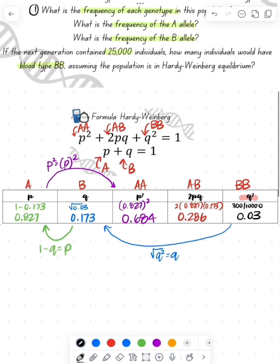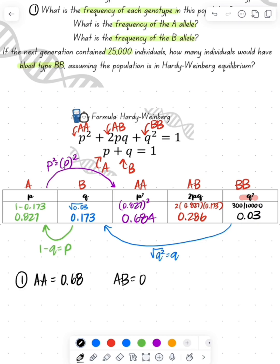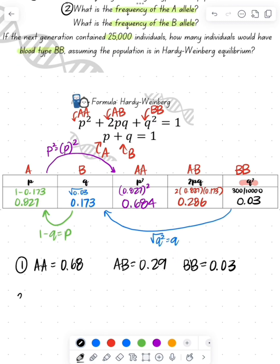So now let's solve all these questions. What is the frequency of each of our genotypes? So AA is going to be my P squared, so it's 0.68. Heterozygous is going to be AB, which is 0.29. And then homozygous recessive, or BB, since this is codominance, is going to be 0.03.